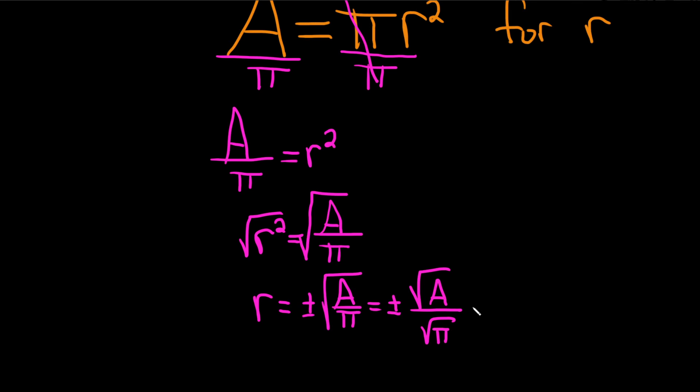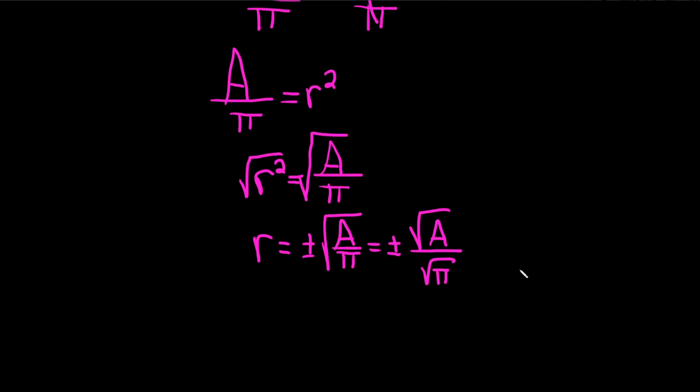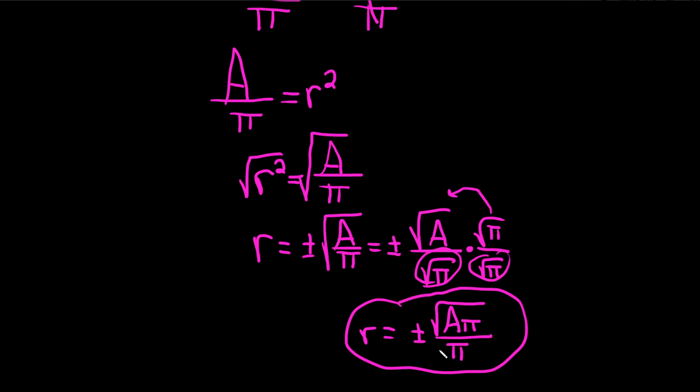And then you would rationalize. Again, this is an optional step. You would multiply by the square root of pi over the square root of pi, which is really 1. You're just multiplying by 1 in a clever way. So this equals plus or minus. In the numerator, you combine these to get the square root of A pi. And in the denominator, the square root of pi times the square root of pi is just pi. So that would be the simplified or rationalized answer to the question.